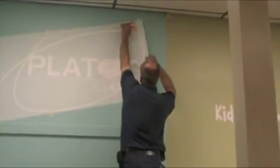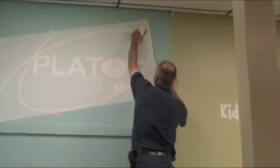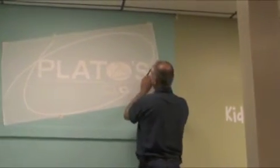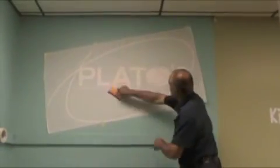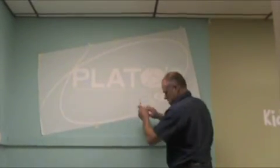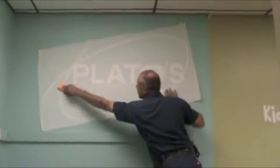And you just take your squeegee and you're on it at an angle. And now we've got the whole logo down. We're going to do a one time last pass over this whole thing. Just to make sure that it's all contact to the wall.